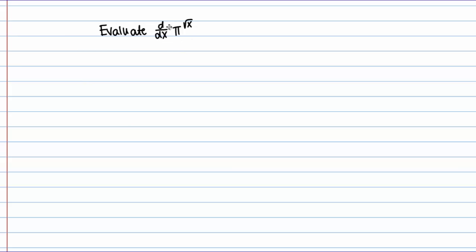In this example we want to evaluate the derivative with respect to X of pi to the square root of X. Now this is a funky looking expression, so let's figure out what's going on here and pick the appropriate derivative rule. You might be tempted to use the power rule in this situation, but that is a bad, bad, bad idea.